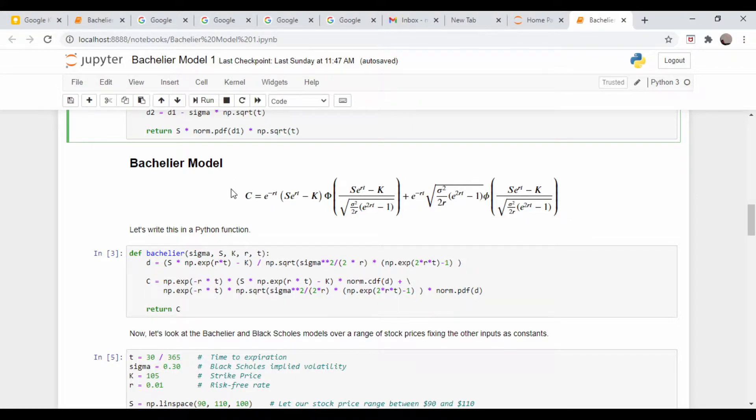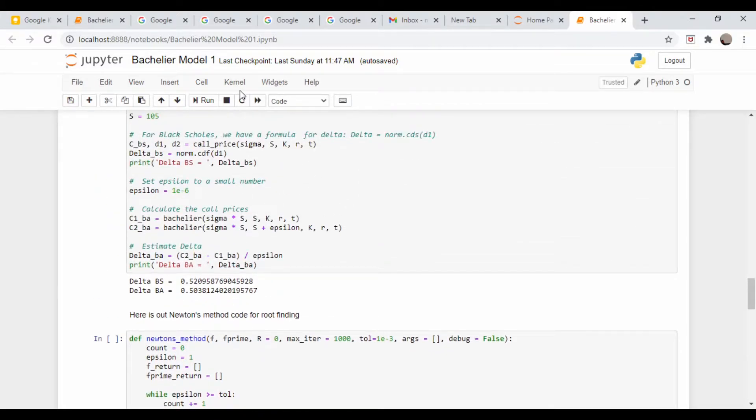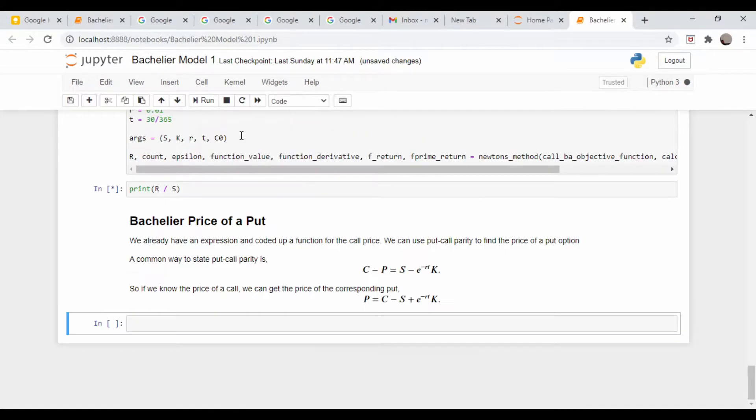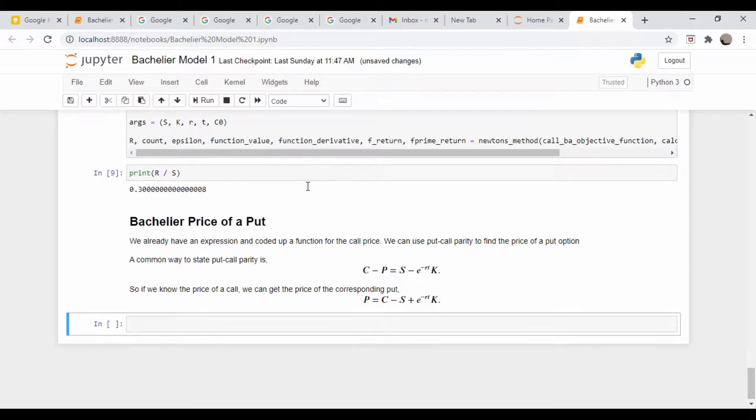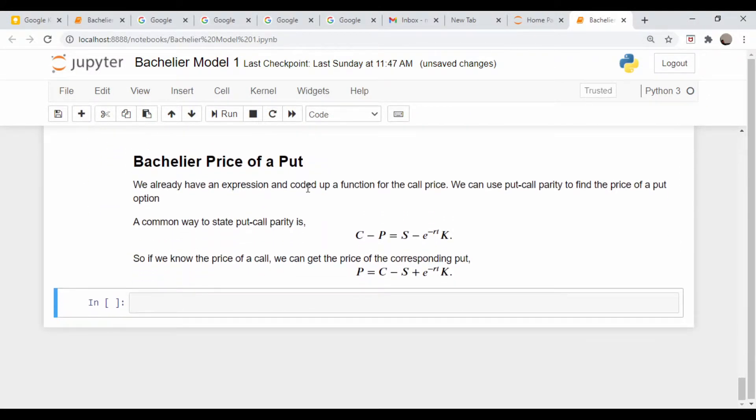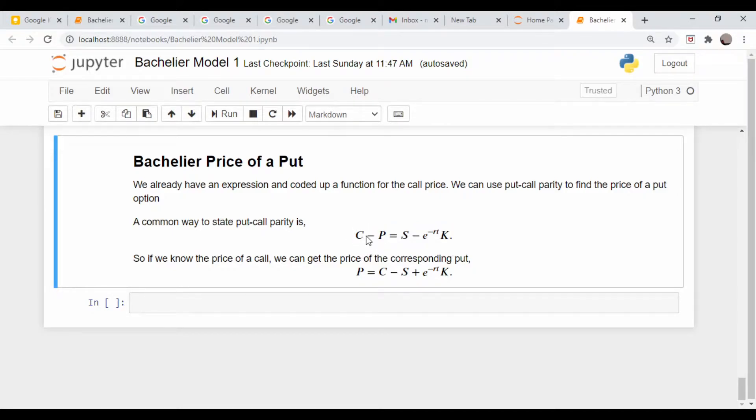I know somebody is going to ask, so let's also just figure out a price of a put. I'm going to use put-call parity to do that. Put-call parity is usually expressed like this: if you know the price of a call C, and subtract the price of the corresponding put at the same strike, you should get back the stock price minus the strike price multiplied times e to the minus RT. We can rearrange that and get the price of a put. This is how they get the price of the put option on the Black-Scholes Wikipedia page.